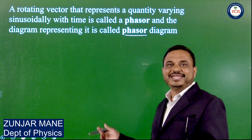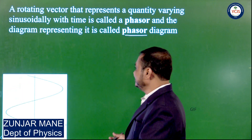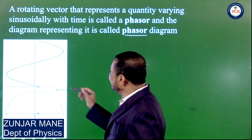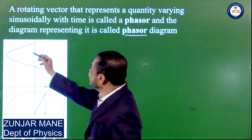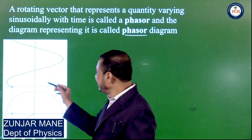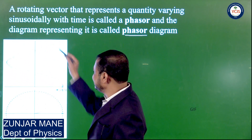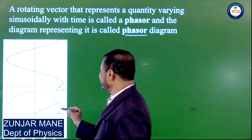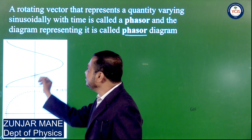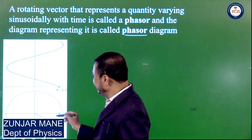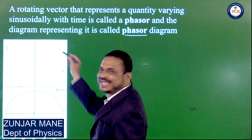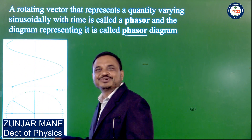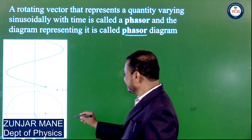I will show one animation from the internet — I am thankful to that provider or website. We see the connection between circular motion and oscillatory or sinusoidal motion in previous topics. Here the variation is sinusoidal. This vector rotates and if it is connected with a linear motion, then this variation is sinusoidal and this variation is circular. This rotating vector is called a phasor.